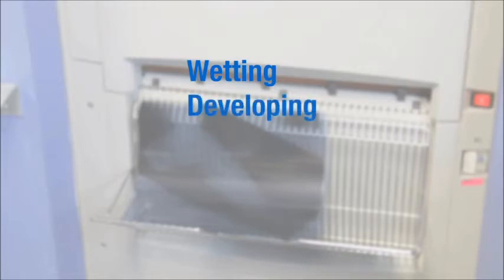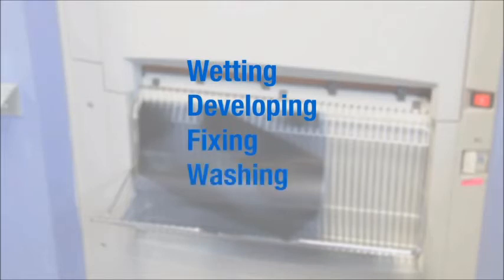Wetting: water is applied to the emulsion, causing it to expand, and allowing for increased chemical spread and permeation of the gelatin. In automatic processing, this step occurs at the same time as developing. The steps are developing, fixing, washing, and drying.